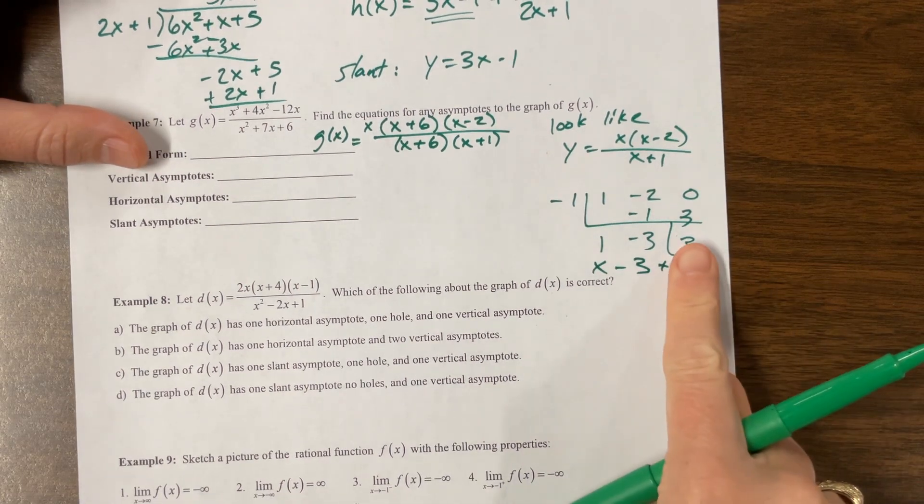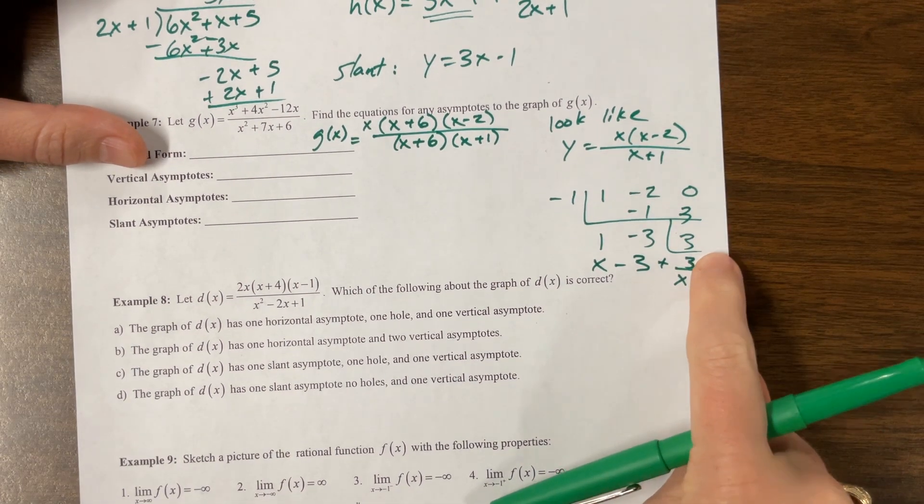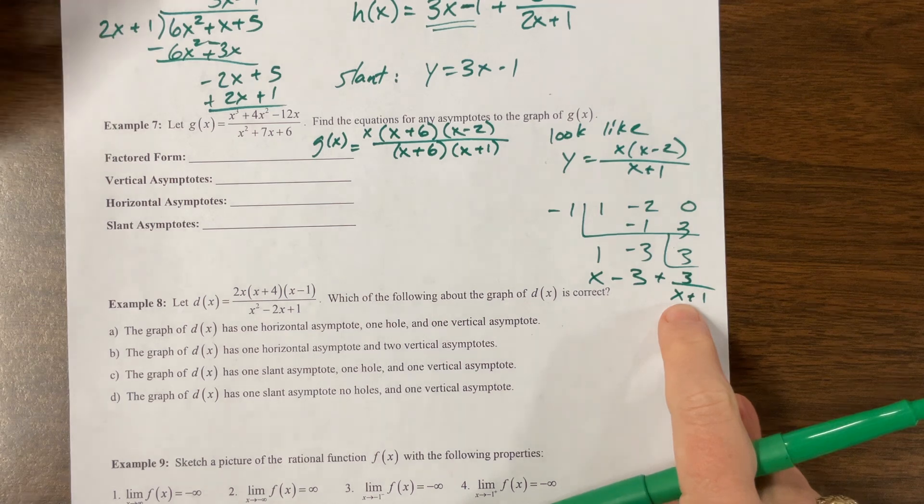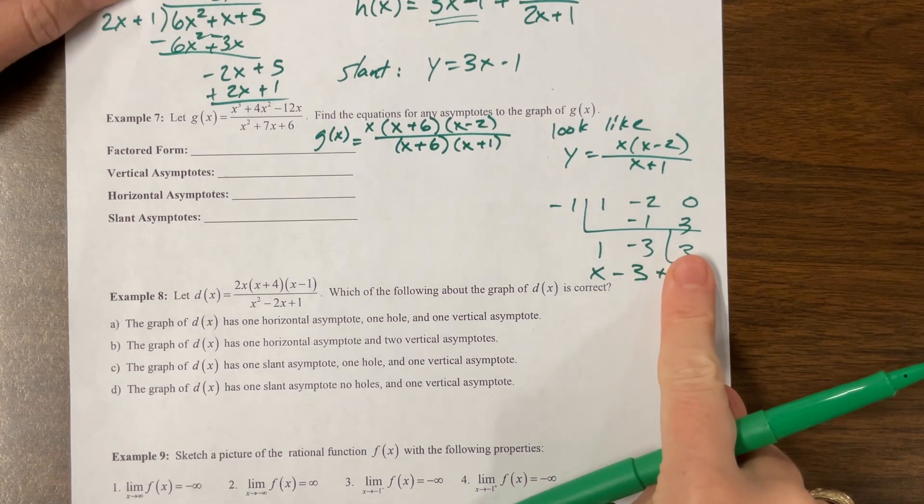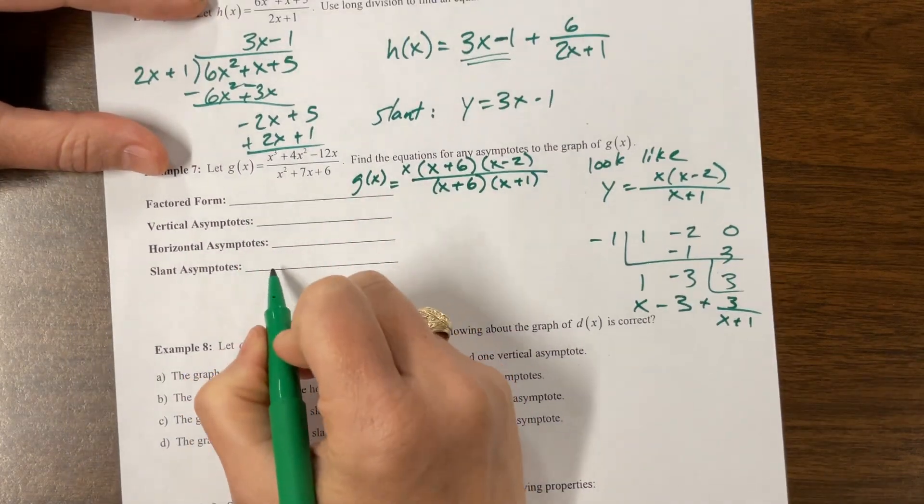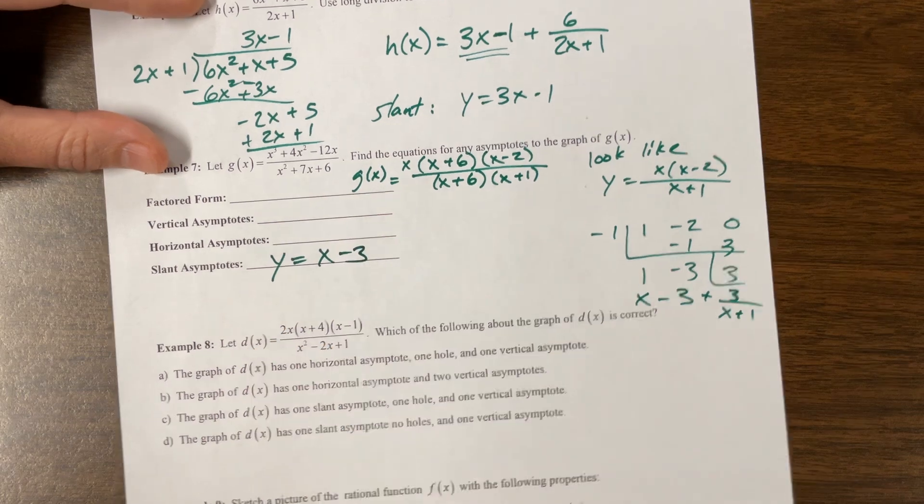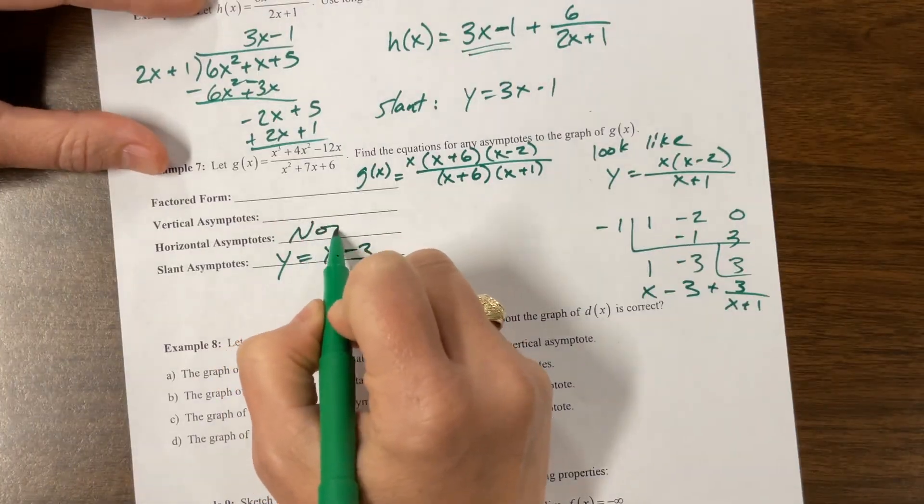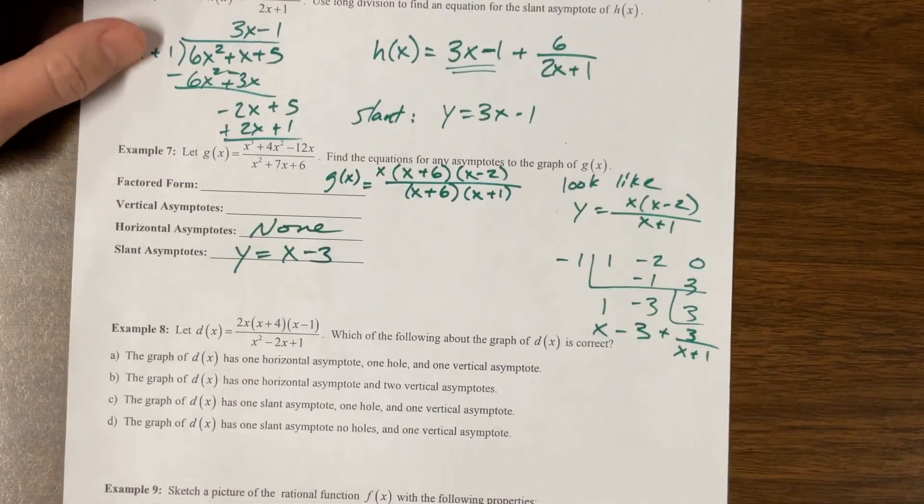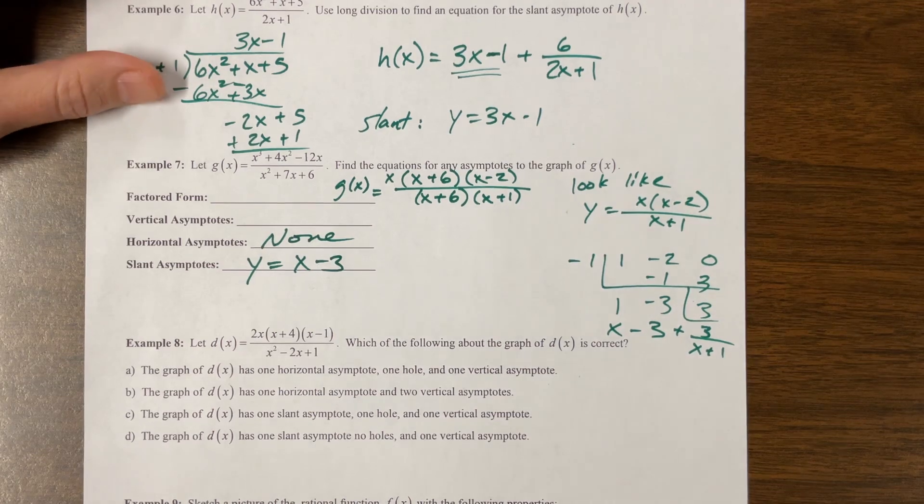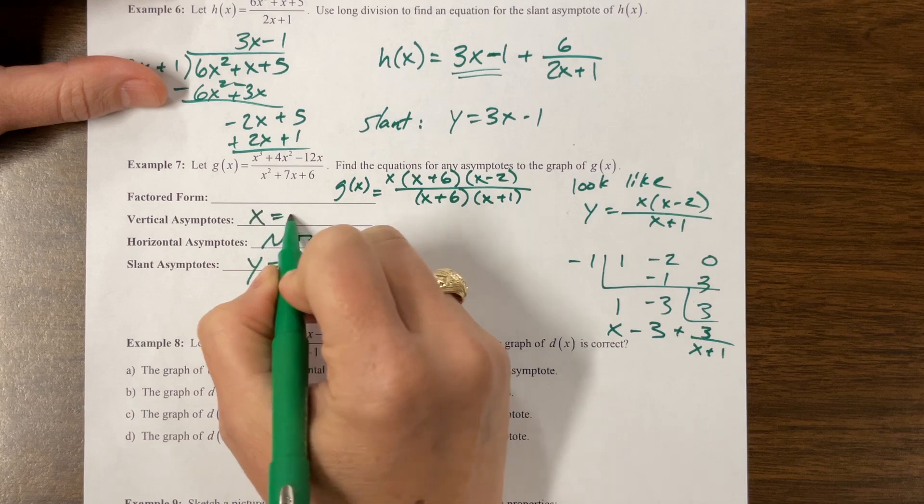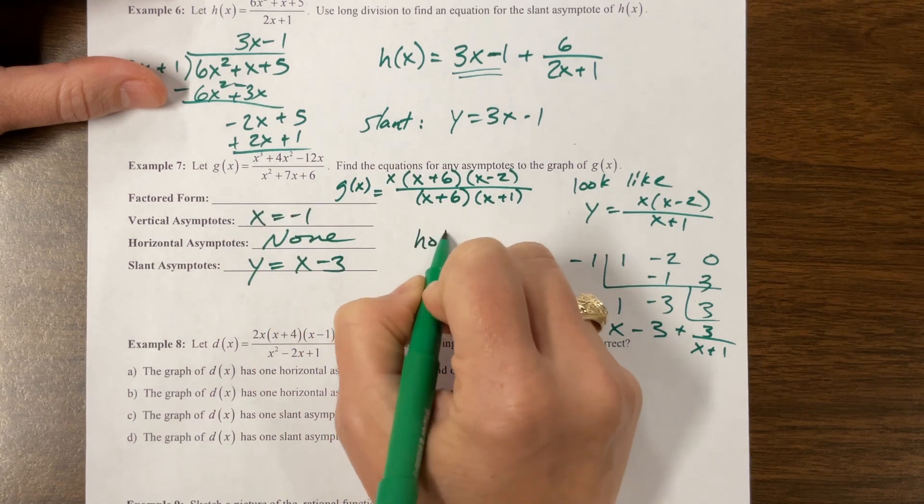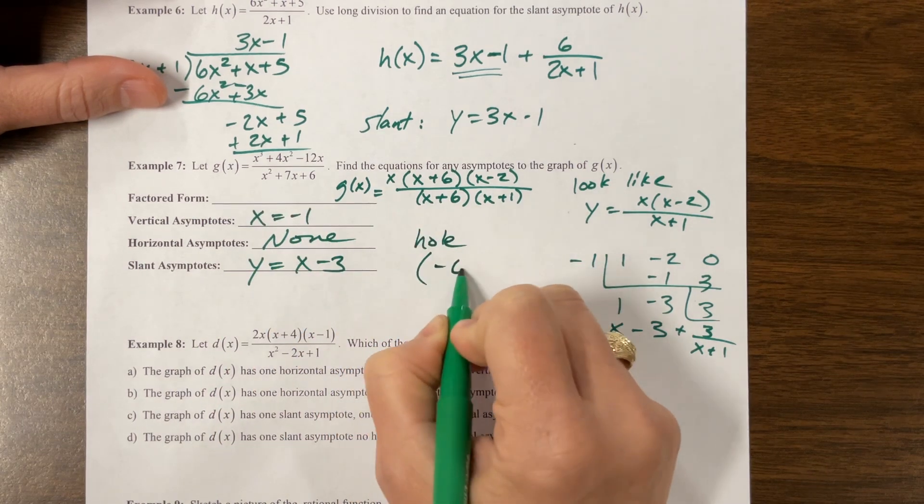But as x gets ridiculously large, I have $3 that I get to share with a ridiculously large number of people. If I shared $3 with the whole world, you get not technically zero, but it might as well be zero. So your slant asymptote, y equals x minus 3. There is no horizontal. You will either have a horizontal asymptote or a slant asymptote. You won't have both. Vertical asymptotes, we look here and we have x equals negative 1. And they didn't ask for the hole, but the hole is when x equals negative 6.